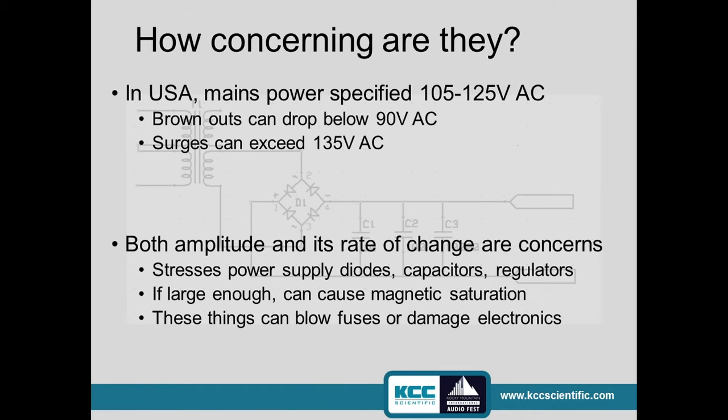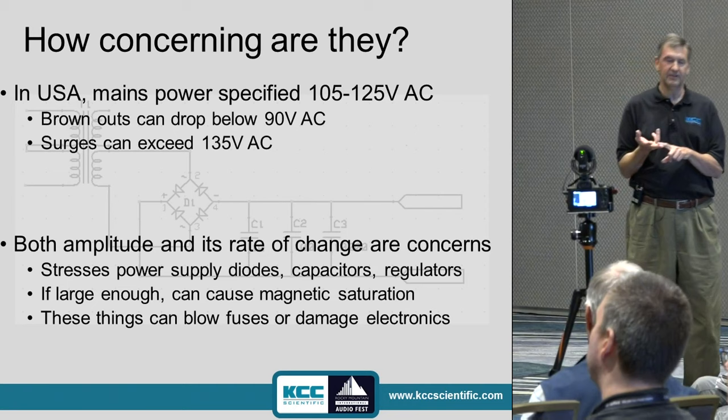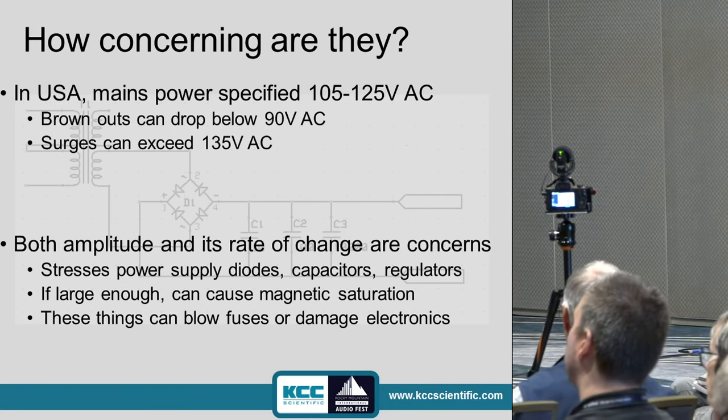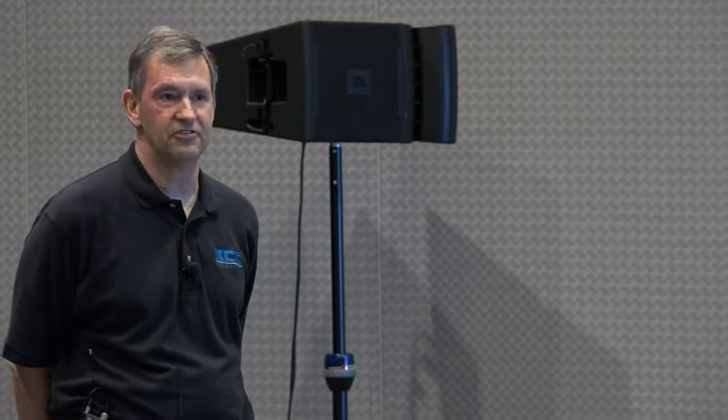In the US, the power supply is specified between 105 and 125 volts AC — that's a pretty wide range. I've observed brownouts in various locations that have dropped well below 90 volts, and surges that have exceeded 135 volts for reasonable periods of time. It's not just the amplitude itself but also the rate of change. Things that happen more rapidly than the electronics is designed to tolerate really get you. If you get the voltage big enough, it can saturate the magnetics in your power transformers and audio equipment — blown fuses, damaged circuits, even exploding capacitors.